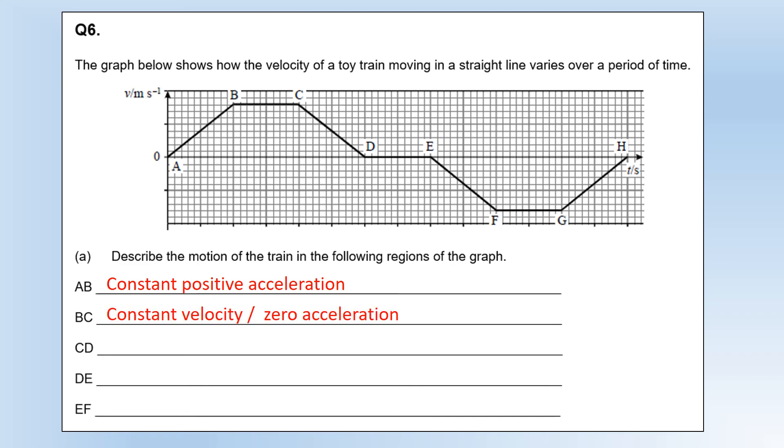Between B and C, it's the velocity that's constant, so we could also describe that as zero acceleration. Between C and D we can see again it's a straight line graph, so constant acceleration, but it's going to be negative because it's decreasing the velocity. Between D and E, velocity is zero, so it's clearly stationary. And between E and F is constant negative acceleration, which we could also describe as accelerating in the opposite direction.